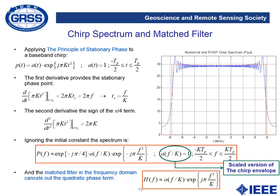We can use what is known as the principle of stationary phase to obtain a mathematical approximation of the chirp spectrum. The chirp spectrum will have one term that is the spectral version of the chirp envelope — if the original chirp was a rectangular pulse, the chirp spectrum will also have the shape of a rectangular pulse — plus a phase term that is quadratic with respect to frequency. The matched filter used to compress the chirp signal is a conjugated version of the original chirp spectrum, and it cancels out this quadratic phase term.